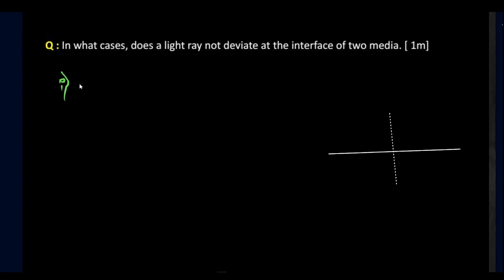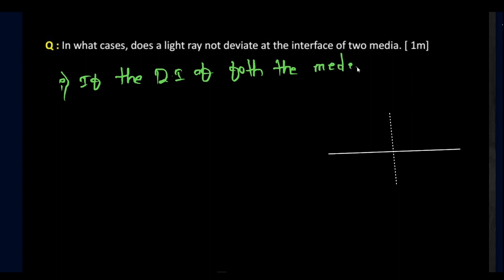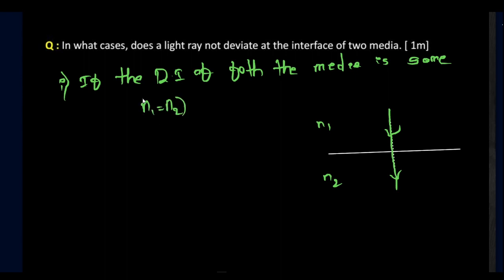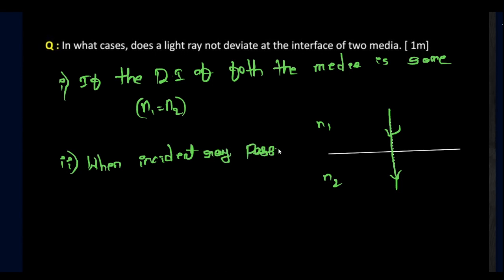When light goes from one medium to another, if n1 equals n2, the light ray does not refract. The second case is when the incident ray is along the normal — in that case also, no refraction occurs. These are the two important cases where a light ray does not deviate at the interface of two media.